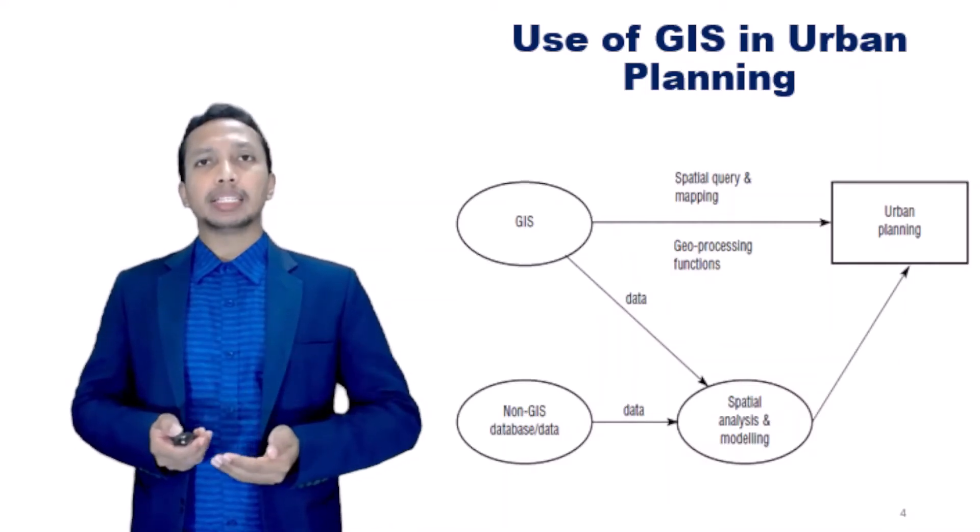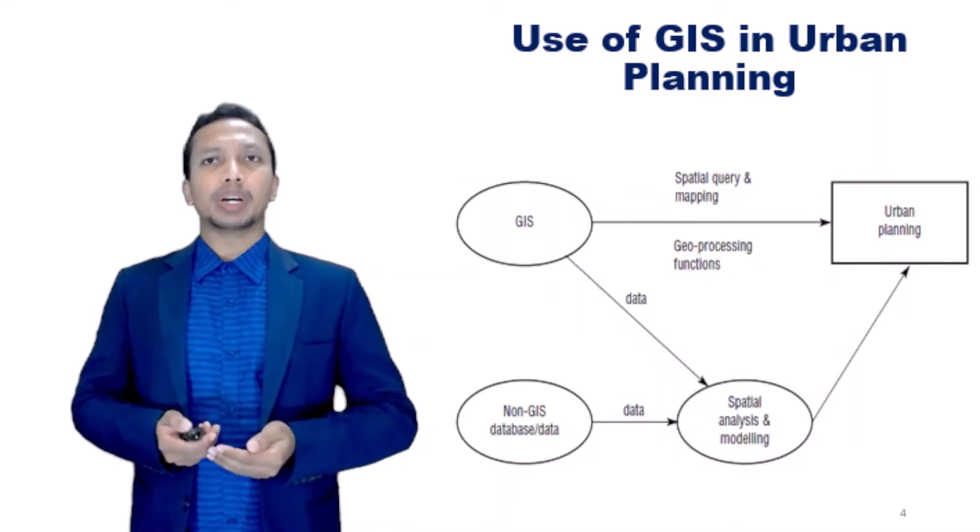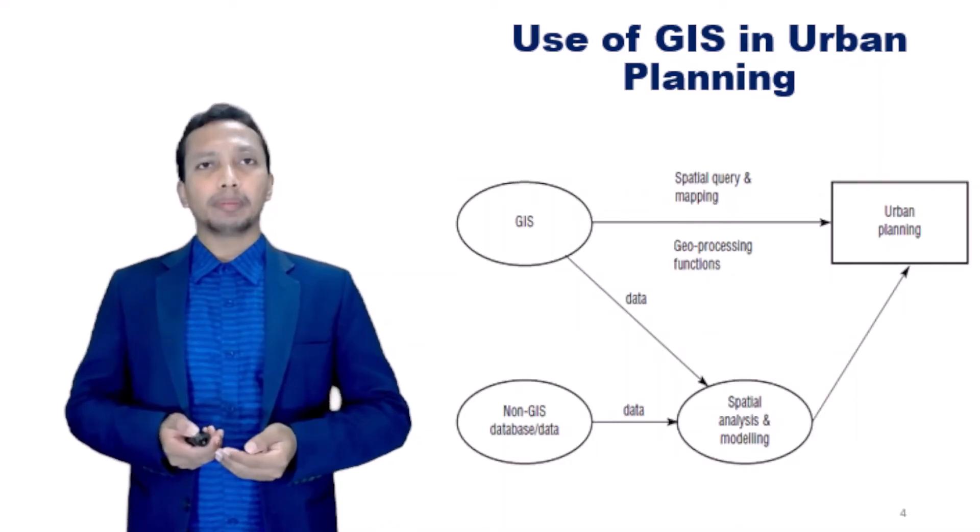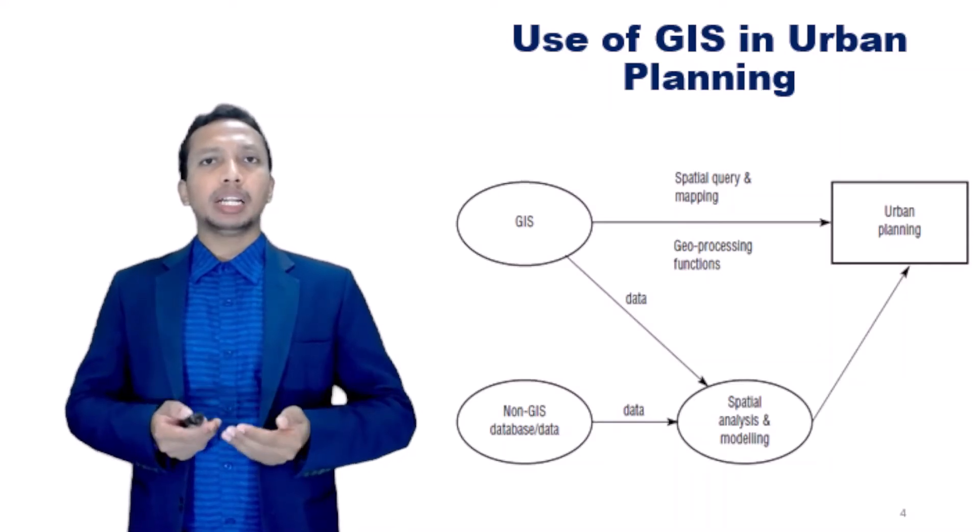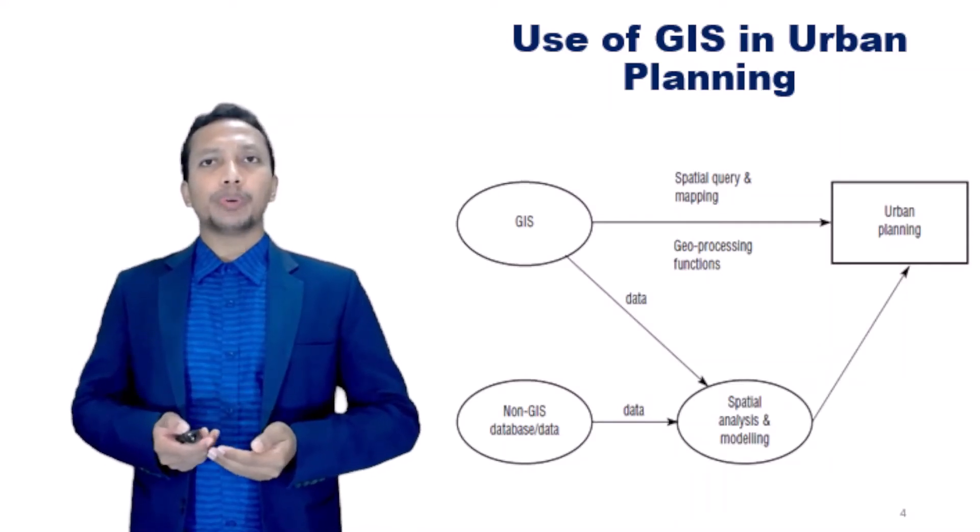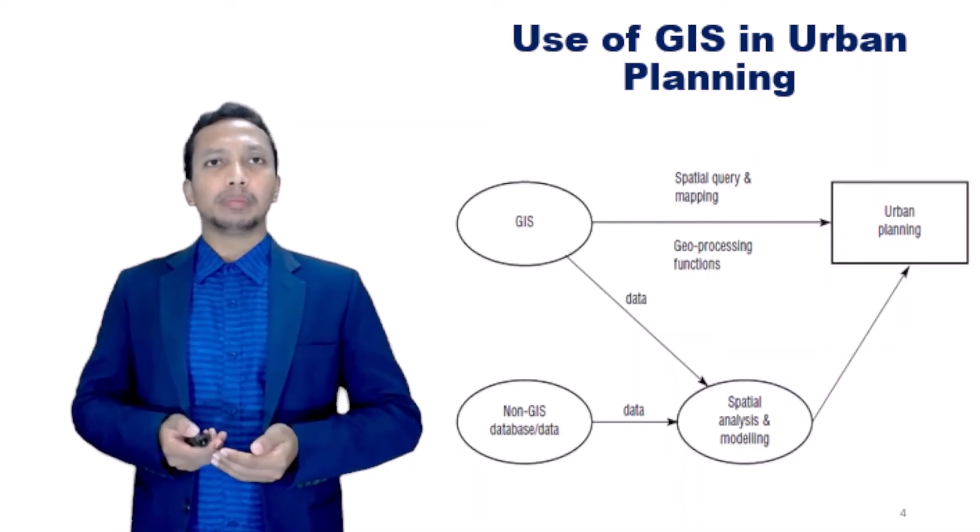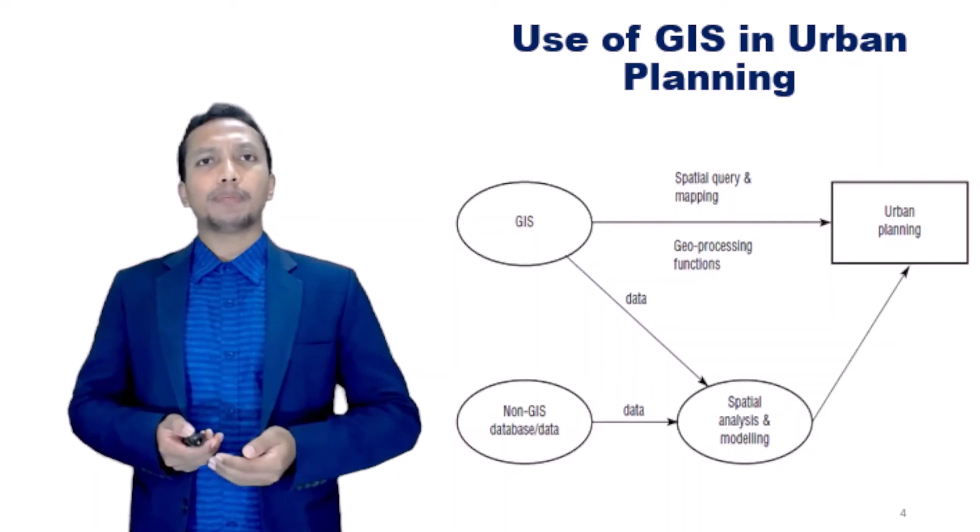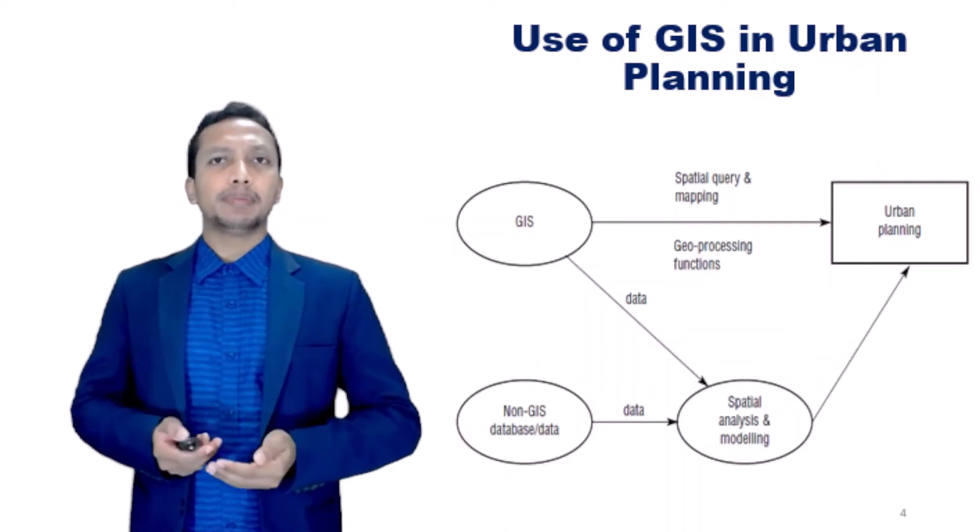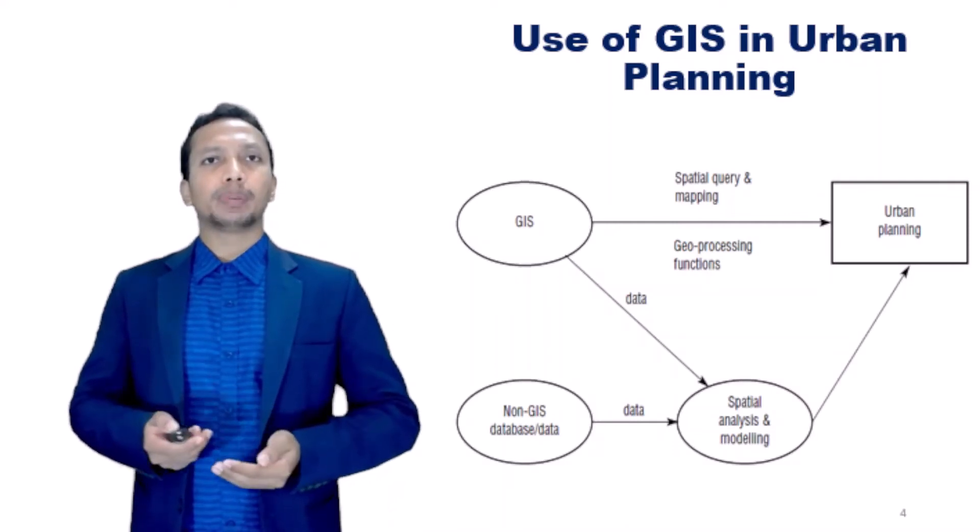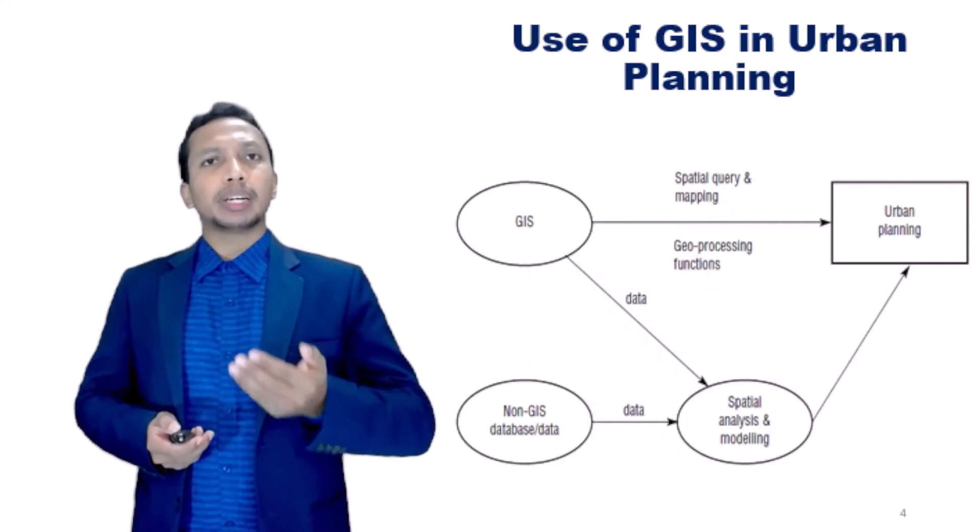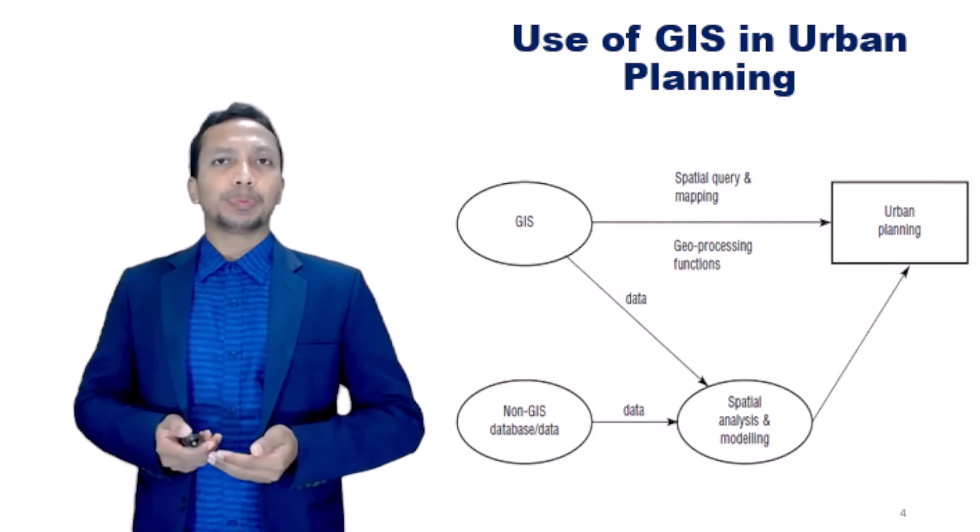GIS serve both as a database and as a toolbox for urban planning. In a database-oriented GIS, spatial and textual data can be stored and linked using the georelational module. Current GIS supports efficient data retrieval, query, and mapping. Planners can also extract data from their databases and input them to other modeling and spatial analysis programs.